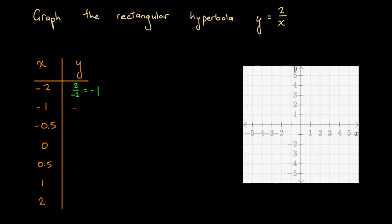What about x equals minus 1? At x equals minus 1, we have y equals 2 over minus 1. Well, again, a positive divided by a negative is a negative, and 2 divided by 1 is just 2. Anything over 1 is always that thing itself.